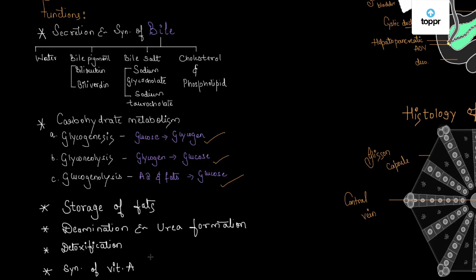Similarly, proteins like prothrombin and fibrinogen are also produced by the hepatic cells. Factors responsible for blood clotting are also produced by the liver. The liver is also responsible for making blood plasma proteins. Overall, the liver is one of the most important glands in our body and performs a wide variety of functions.